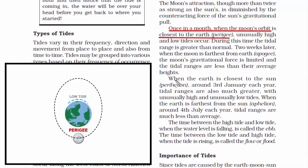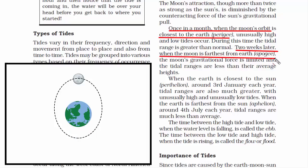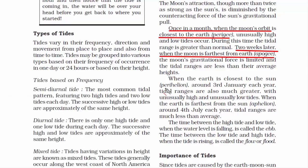On this side of the earth, low tide occurs. Two weeks later, when the moon is farthest from the earth, it's called apogee. During this time the moon's gravitational pull is limited, and the tidal ranges are less than their average heights.